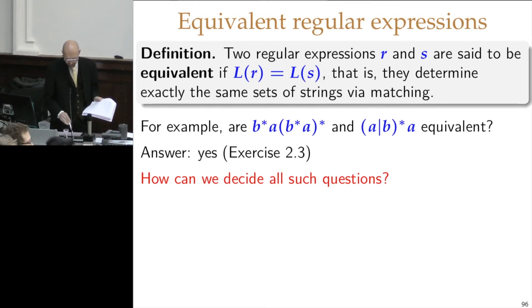This regular expression b*a(b*a)* - what does this do? Well, you can have as many b's as you like, including none. Then you have to have an a. Then you can have as many of these brackets as you like, including none. And if you have any of the brackets, you can have as many b's as you like. And then one a. But because you have a star in here, you might not have any a's. But that a, nobody is excusing it from having that one. So you have to have at least that a.